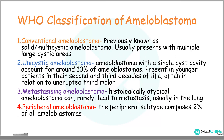The World Health Organization has classified ameloblastomas into four types: conventional ameloblastoma, unicystic ameloblastoma, metastasizing ameloblastoma, and peripheral ameloblastoma. The conventional ameloblastoma was previously known as solid or multi-cystic ameloblastoma and usually presents with multiple large cystic areas. Unicystic ameloblastoma is a type with a single cyst cavity, accounting for about 10% of all ameloblastomas, and is usually present in younger patients in the second and third decades of life, often related to an erupted third molar.